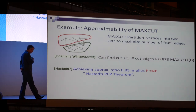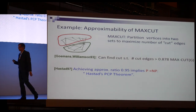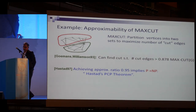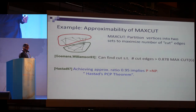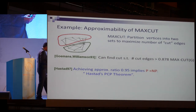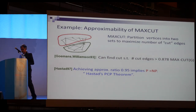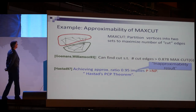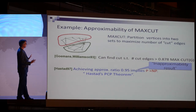This is an inapproximability result — it shows limits on approximation assuming a complexity conjecture, namely that approximation is no easier than exact computation. This was a tremendous achievement, but these techniques involving probabilistically checkable proofs got stuck at this natural place.